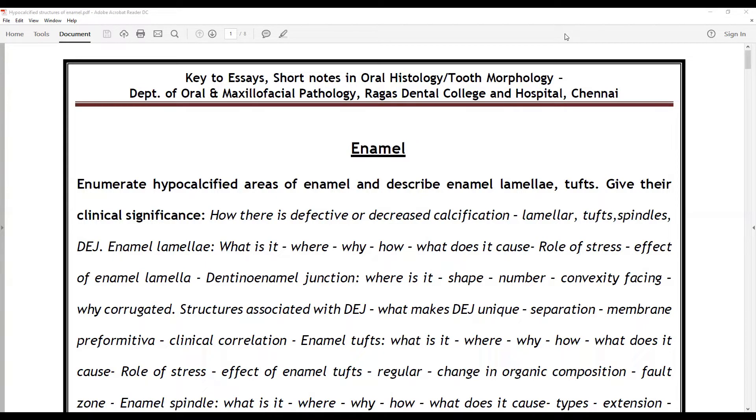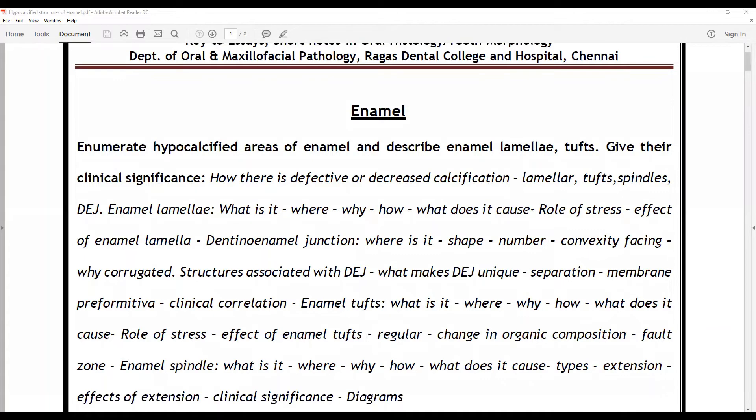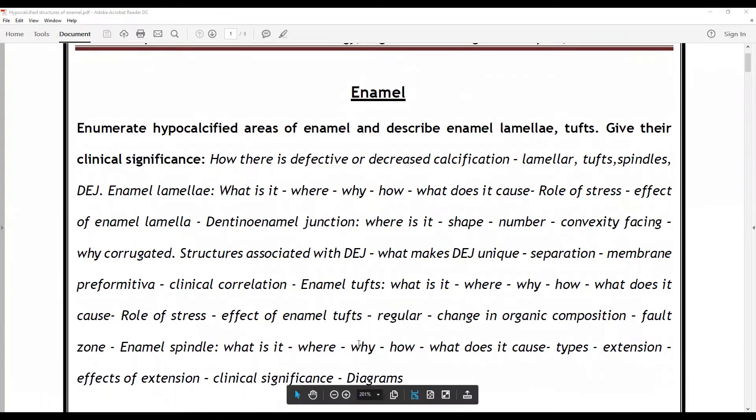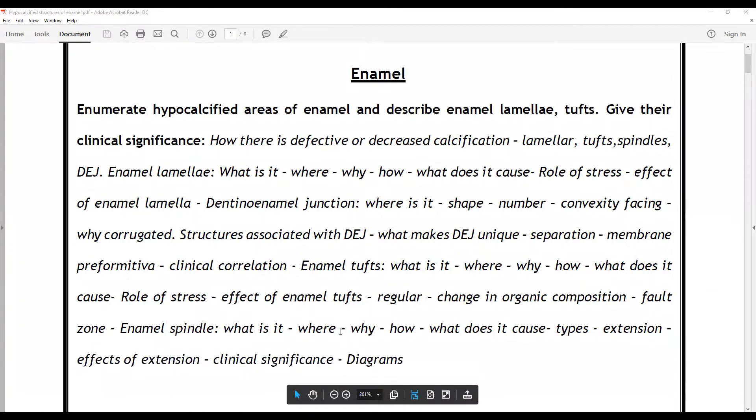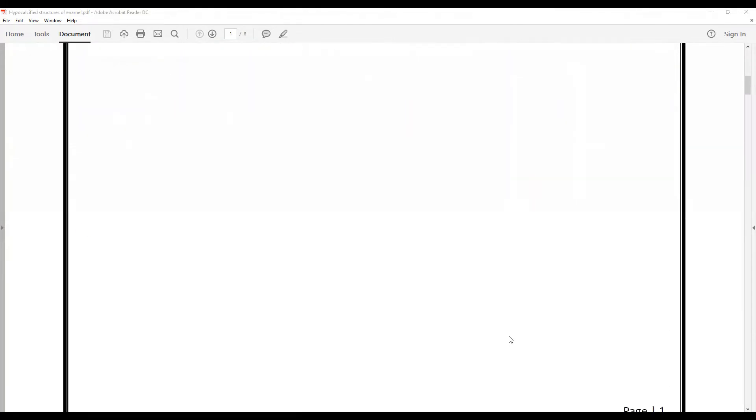For the dentinoenamel junction: where is it, the shape, the number, the convexity facing, why corrugated, structures associated with DEJ, what makes DEJ unique, the separation membrane, role of membrane preformative, and clinical correlations. Similarly for enamel tufts and spindles, the clinical signification, all these with diagrams going into the answer.